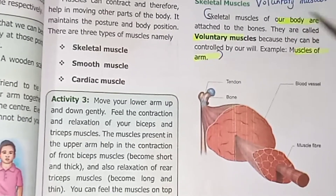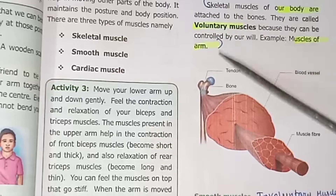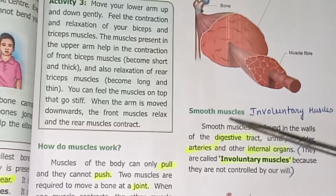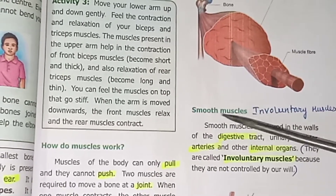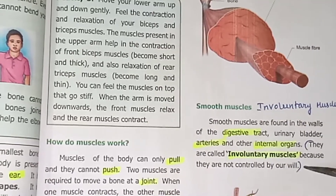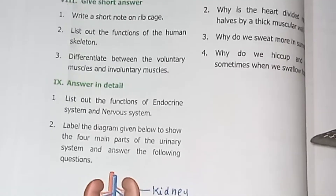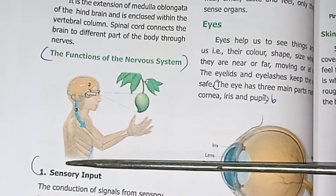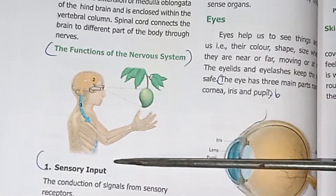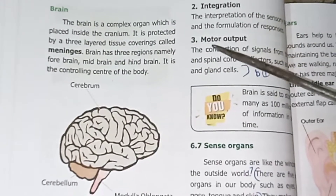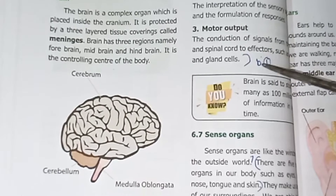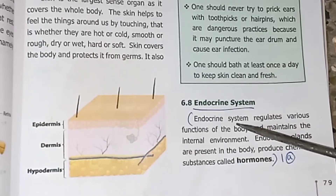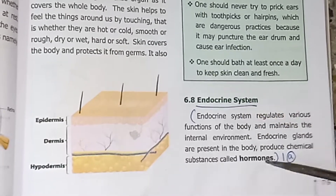Differentiate between voluntary muscles and involuntary muscles — page number 71. Voluntary muscles are skeletal muscles, for example muscles of the arm. Involuntary muscles are smooth muscles, controlled without our will. List out the functions of the endocrine system and nervous system — page number 78. Functions of the nervous system: sensory input, integration, motor output. The endocrine system produces chemical substances called hormones.